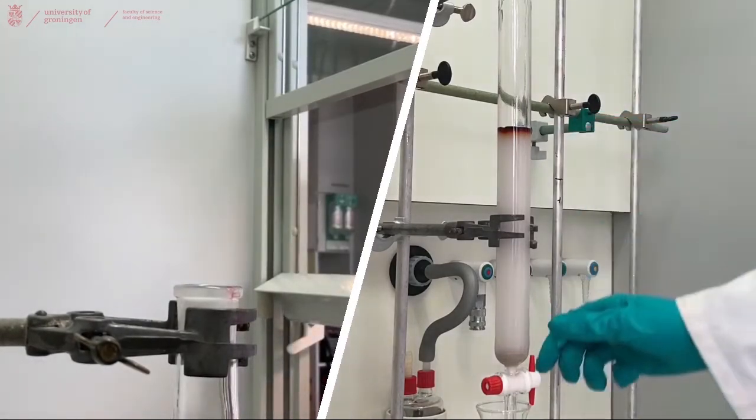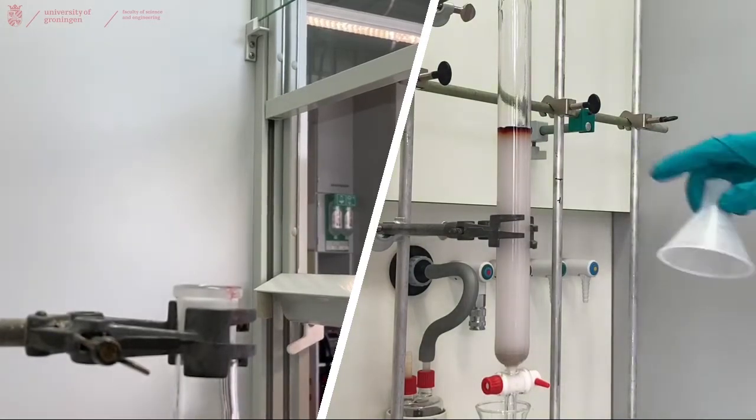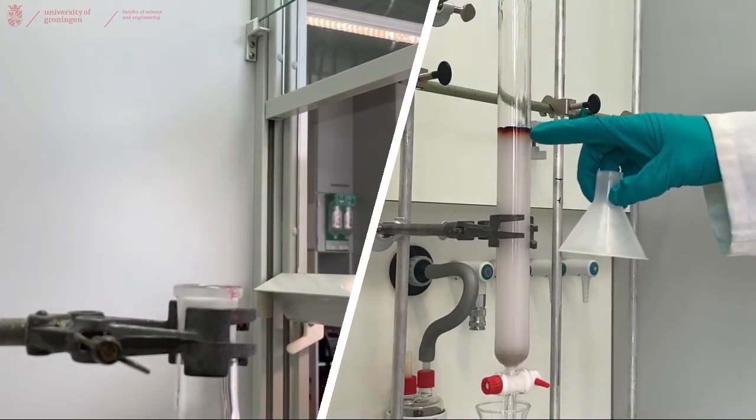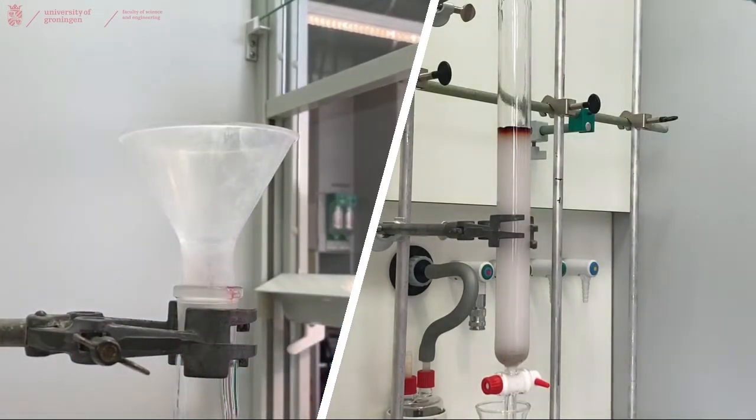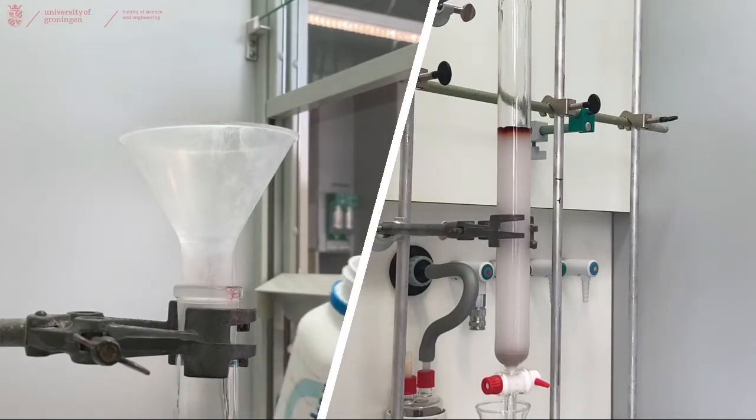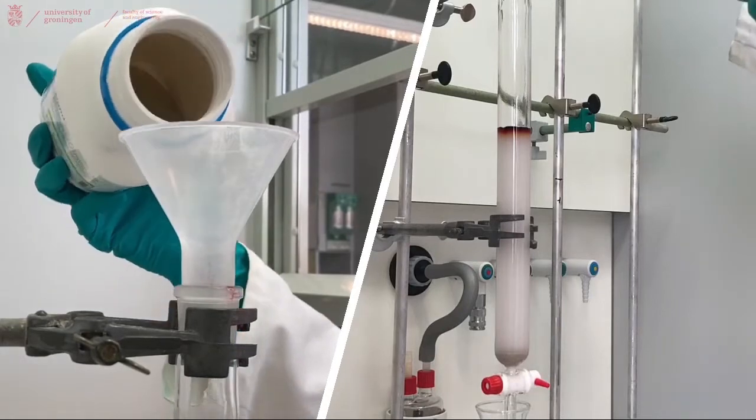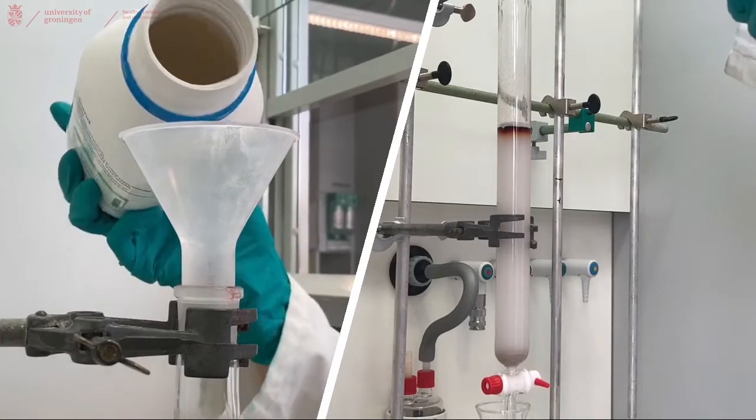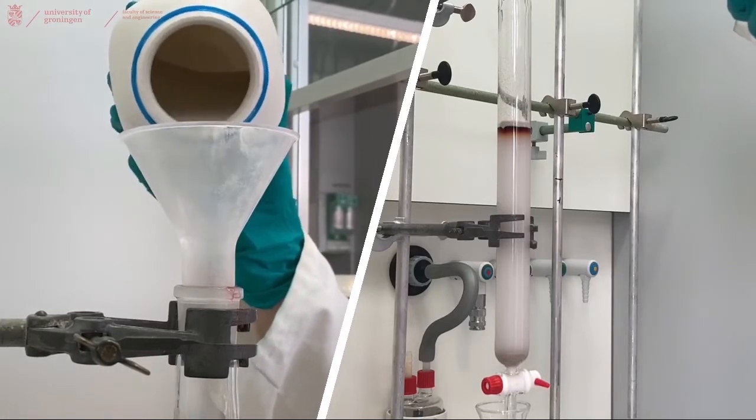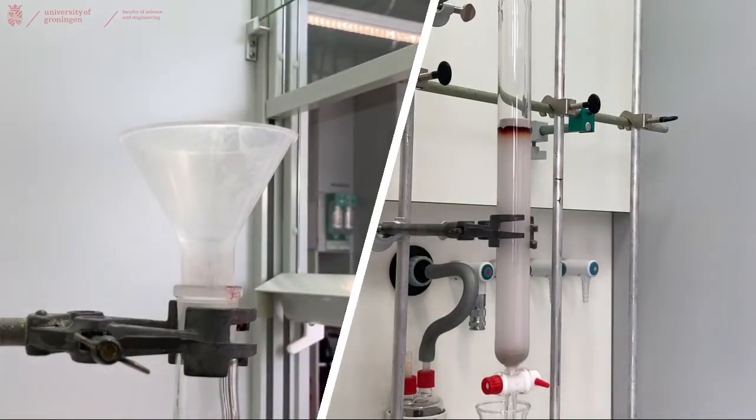Now that it's in the column, close the column and cover the top with a small layer of sand to prevent any compound going back into the eluent that you will place on top of your column. To do this, use a funnel for solids and the sand. And a small layer is enough.